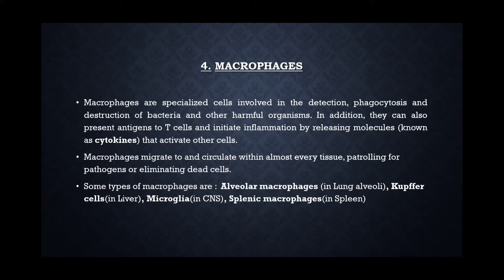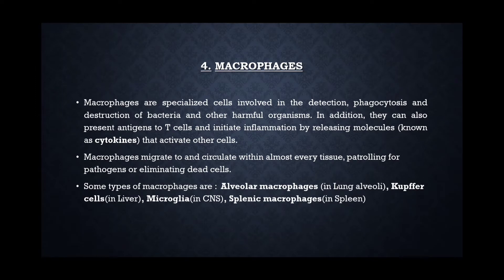Fourth one is macrophages. These are specialized cells involved in phagocytosis, which means engulfing and destruction of harmful foreign organisms. Macrophages can also present antigens to T cells, which initiate inflammation by releasing cytokines. Some types of macrophages are alveolar macrophages, which are present in lung alveoli; Kupffer cells in the liver; microglia, which is a macrophage present in the central nervous system; and splenic macrophages from the spleen.